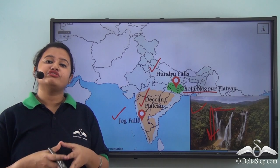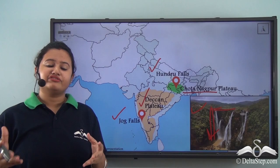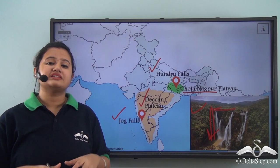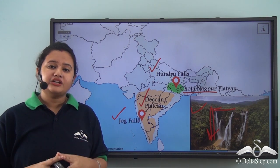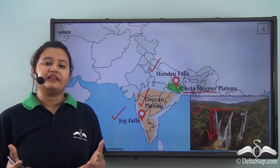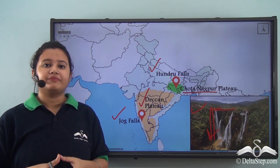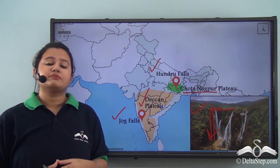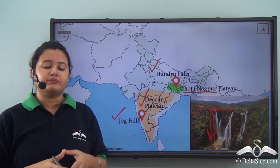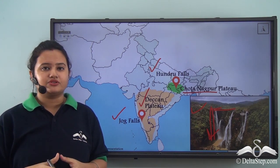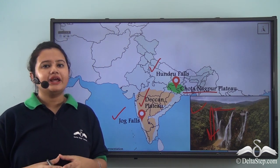In today's lesson, we first understood the concept of plateaus — a highland with a flat top and steep edges, resembling a table, also known as a tableland. We then discussed some major plateaus of the world and the importance of plateaus. This brings us to the end of today's discussion on plateaus.